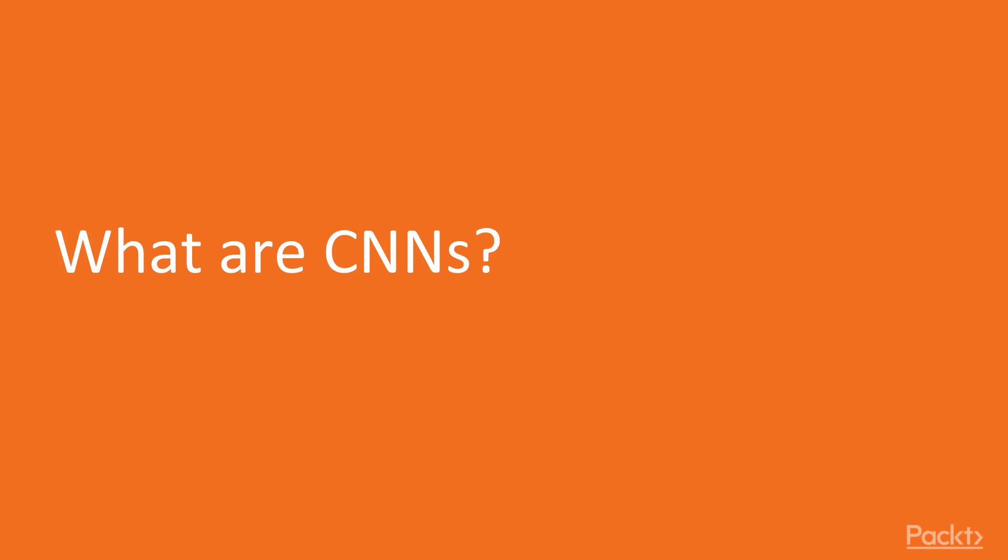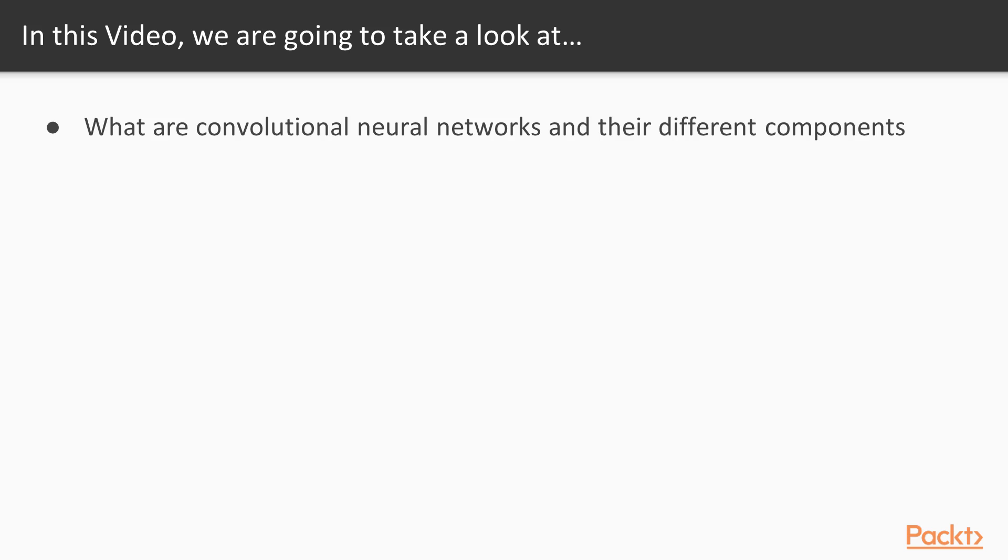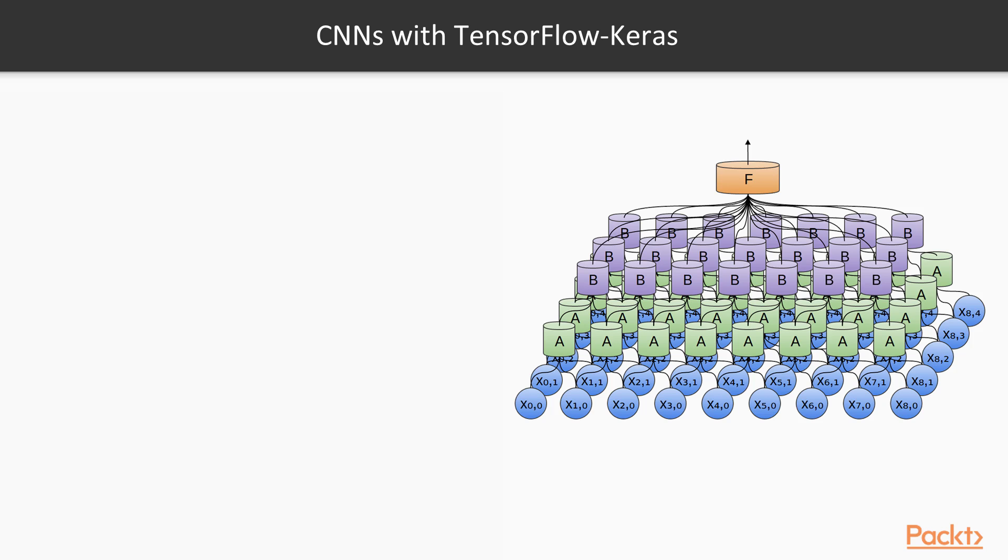Let's get started with lesson one. What are CNNs? CNNs are very similar to ordinary fully connected neural networks. They are made up of neurons that have learnable weights and biases. Each neuron receives some inputs, performs a dot product, and optionally follows it with a non-linearity function.